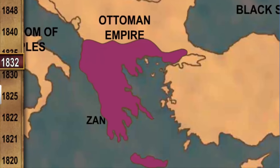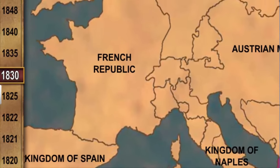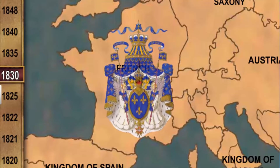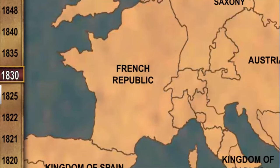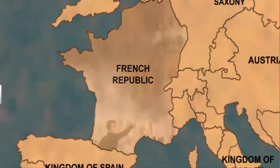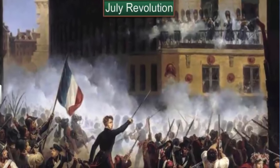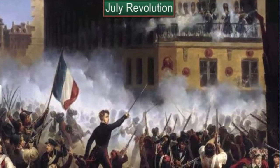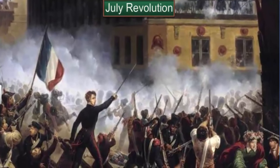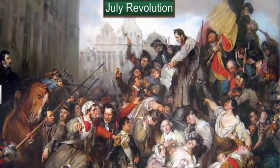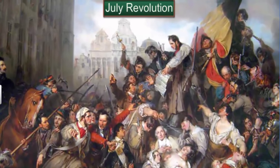In 1830, the Bourbon dynasty, restored in 1815 during the conservatives' reaction, was overthrown by liberal revolutionaries. The French Revolution of 1830 is also known as the July Revolution. Inspired by the French or July Revolution, Belgium broke away from the United Kingdom of the Netherlands.